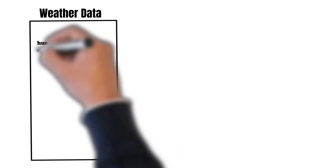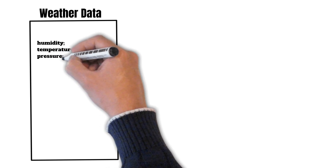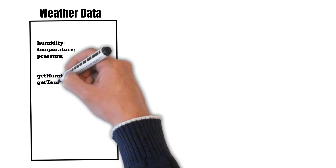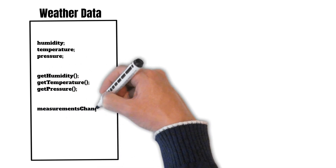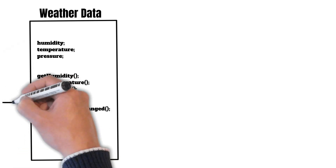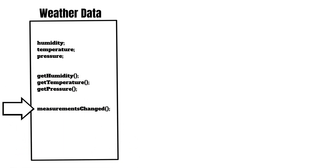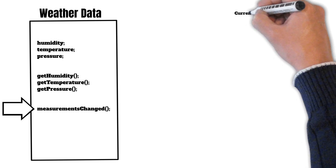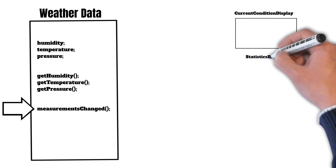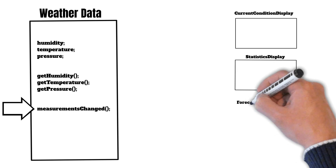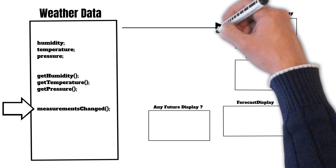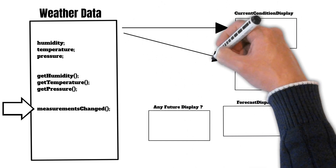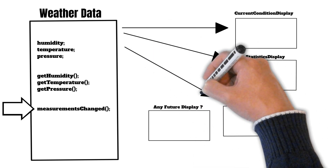Now suppose we have been asked to design a solution for a weather station. We have the WeatherData object which has properties like humidity, temperature, and pressure, along with corresponding getter methods: getHumidity, getTemperature, and getPressure. It has a measurementChanged method which gets called whenever there is a change in these values, and changes in the weather data need to be broadcasted to a set of display objects — for example, CurrentConditionDisplay, StatisticsDisplay, and ForecastDisplay.